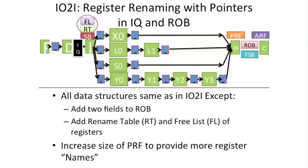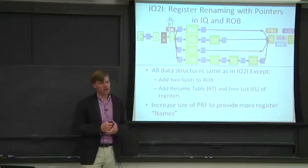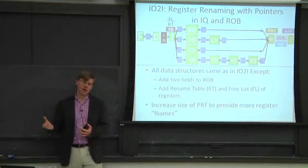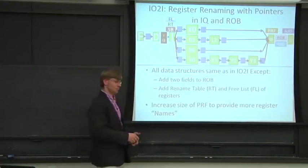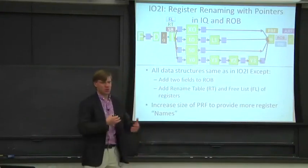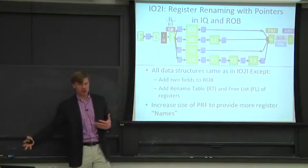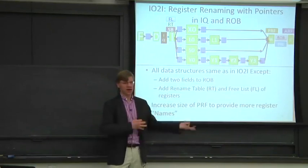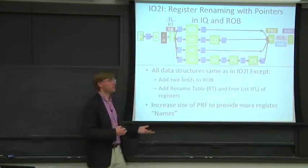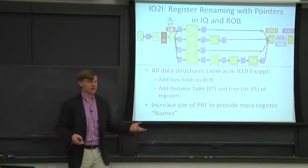Now we're going to add two more structures and slightly modify the existing ones. The first structure we're adding is a free list. The free list keeps track of physical registers that are available to use. We'll have more physical registers than architectural registers, and we need to track which ones are free, because we'll be allocating and deallocating from them quickly as we execute.